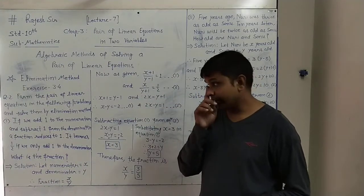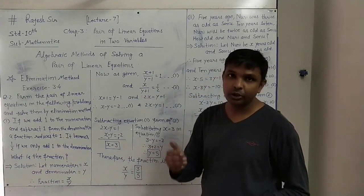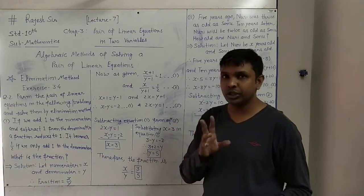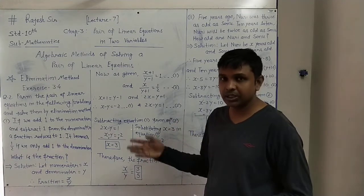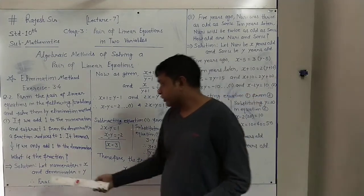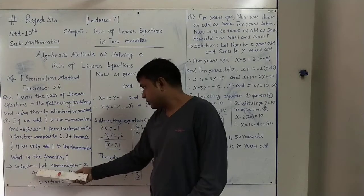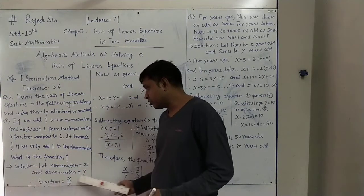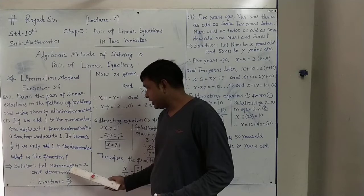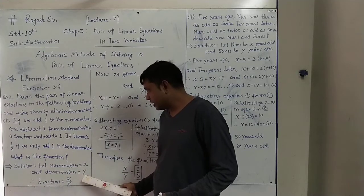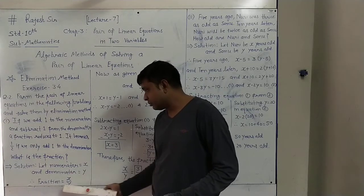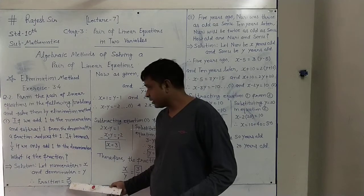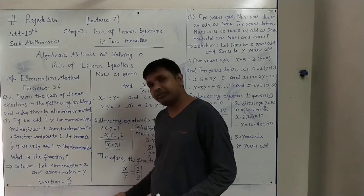Since a fraction is given, it will have a numerator and denominator. In two situations, what is done to the numerator and denominator is given. So in the solution, let the numerator be x and the denominator be y. When numerator is x and denominator is y, the fraction will be x upon y — the original fraction.